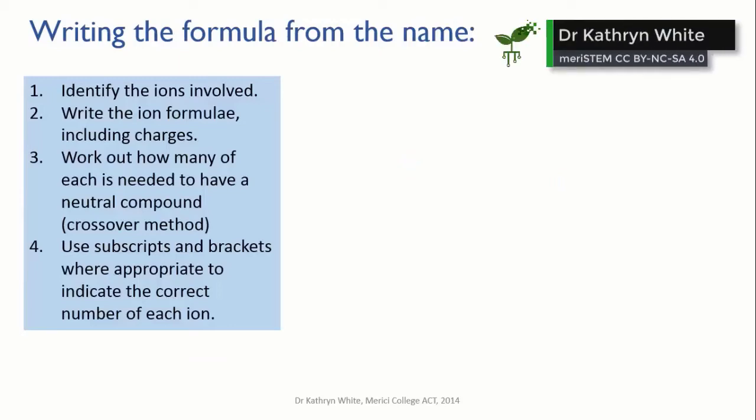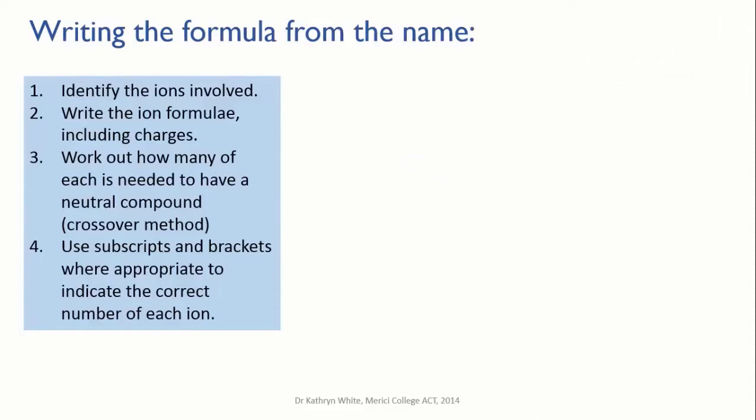Okay, the next thing you need to be able to do is to write the formula from the name. This is slightly trickier, but as long as you learn the rules and practice a bit, you won't find it too difficult. The steps are these: First, you need to identify the ions that are involved, then you need to write out the ion formulae, including the charges on the ions.